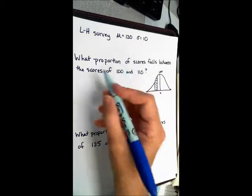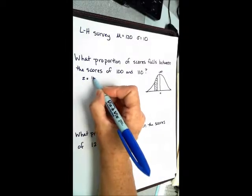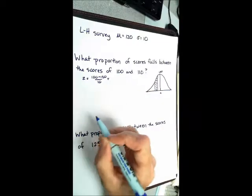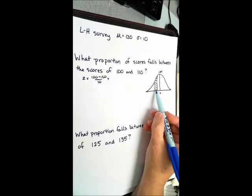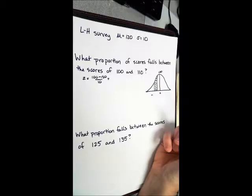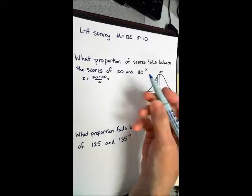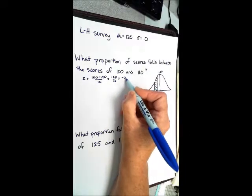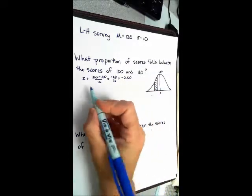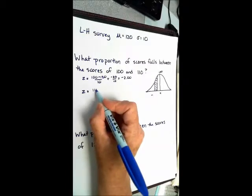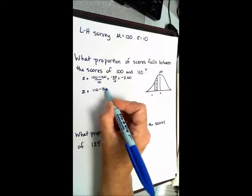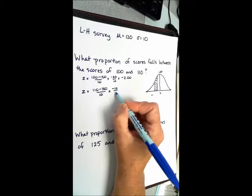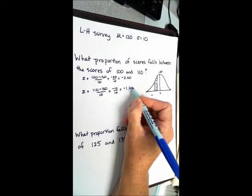Get our z-scores for these two values. So z equals 100 minus 120 divided by 10. What do we already know? It's below the mean. It should be a negative number. It should end up with negative 20 divided by 10, which equals negative 2.00. Then z equals 110 minus 120 divided by 10 equals minus 10 divided by 10 equals negative 1.00.